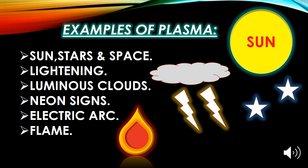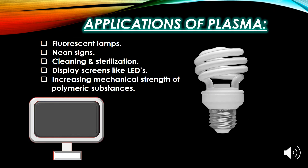In fluorescent lamps, plasma is used. The passage of electricity through the gas in the tube causes ionization of the gas, producing plasma which glows inside the tube. In neon signs, plasma is also used — the passage of electricity through the gas in the tube produces plasma due to ionization of the gas, which glows inside the tube.